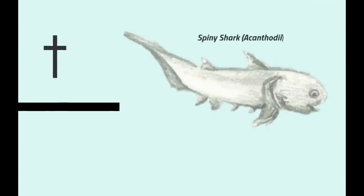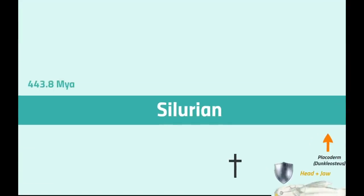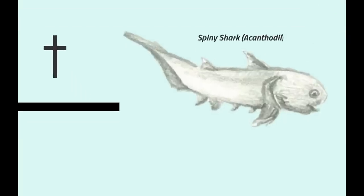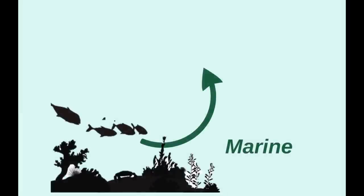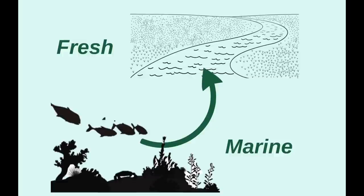Like the placoderms, spiny sharks were among the first jawed fish. This bizarre lineage arose in the early Silurian. The name 'spiny shark' is somewhat of a misnomer — despite their similar appearances, they are in fact not true sharks. They get their name from the bony spines which supported their fins and their shark-like body shape. During the Devonian period, many species of spiny shark moved from marine to freshwater environments, likely to avoid the now highly competitive marine environment, where they thrived as small, swift predators.